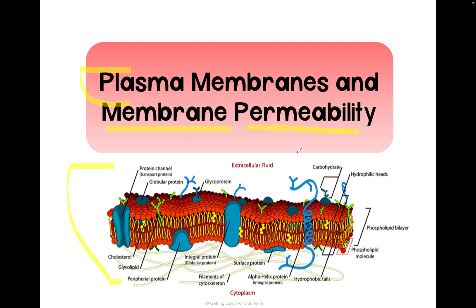Here you can see a model of a plasma membrane. You can see the phospholipids on each side, and you'll notice some other things sticking through. We have some proteins, some carbohydrates, some globular proteins as well as channel proteins, glycoproteins. So there's a lot of stuff shoved into this plasma membrane that all sort of affects its permeability.